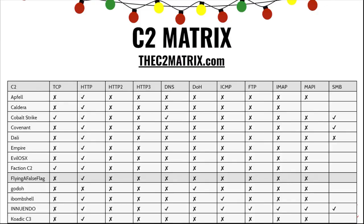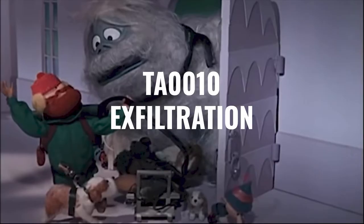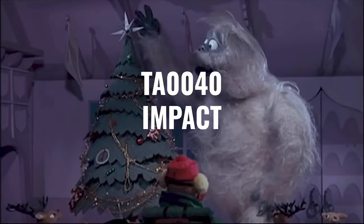Another thing that's great is the C2 matrix. They have a Slingshot VM with the C2 matrix, and you can utilize that to understand and look at the C2 traffic as well. That'll only help you become a better threat hunter, and you want to document your practice.